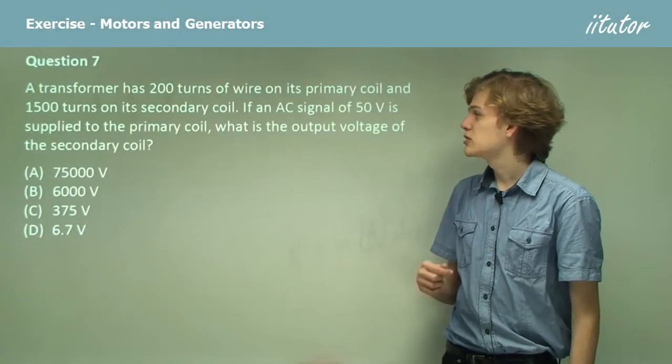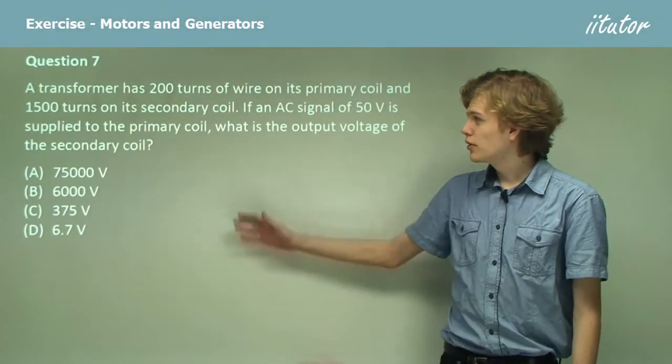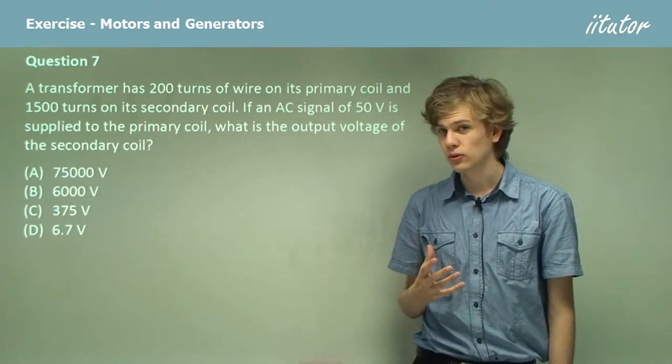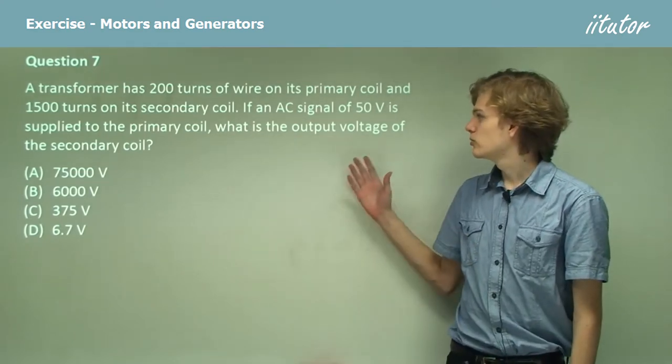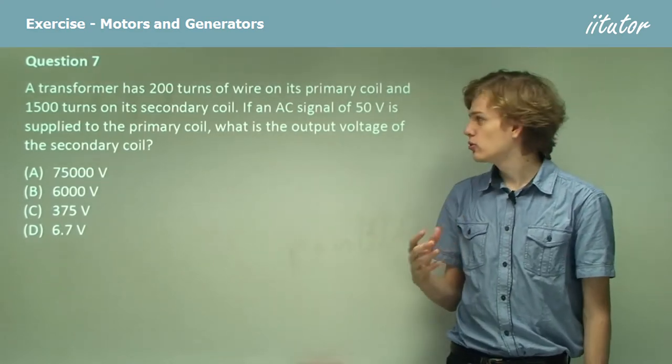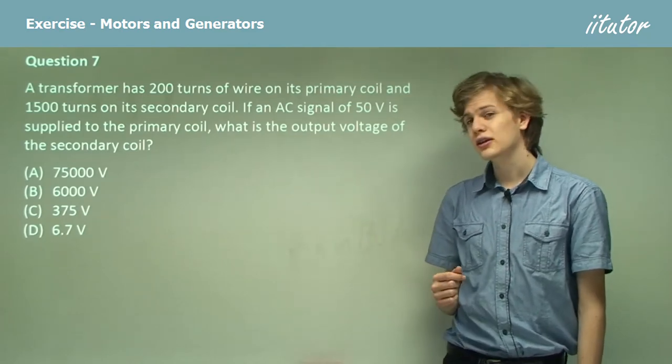The transformer has 200 turns of wire in its primary coil and 1,500 turns in its secondary coil. If an AC signal of 50 volts is supplied to the primary coil, what is the output voltage of the secondary coil?